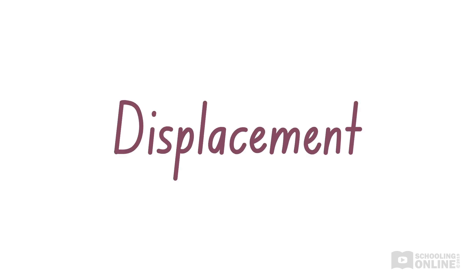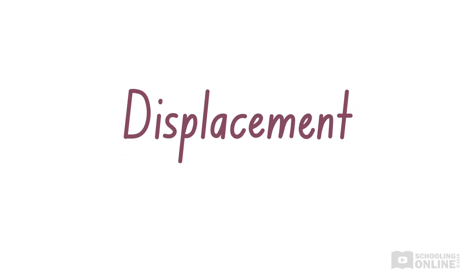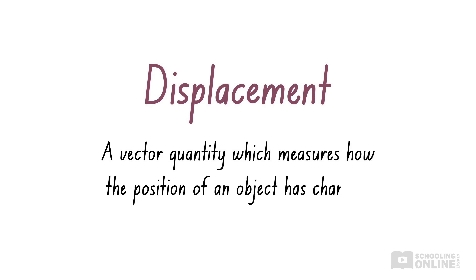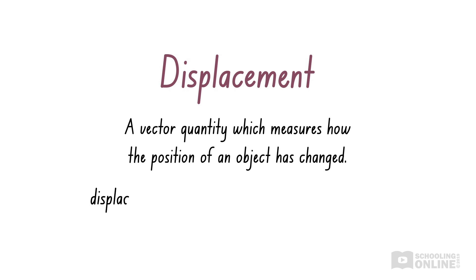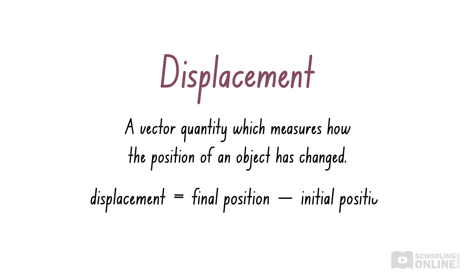Similarly, in physics, we might need to find the displacement of an object. Displacement is a vector quantity which measures how the position of an object has changed. As an equation, displacement is the difference between the final position and the initial position of the object. Since displacement is a vector, it has a magnitude, units of measurement, and a direction.